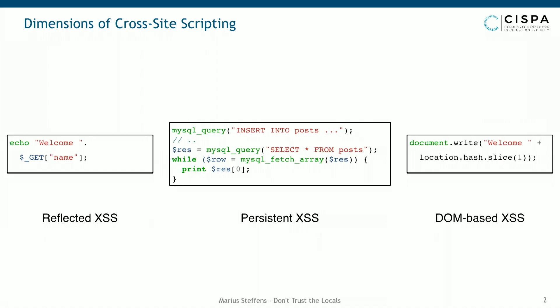When we typically talk about cross-site scripting, what you'll read in most textbooks is that we categorize cross-site scripting into three categories: reflected XSS, persistent, and DOM-based XSS. The particular threat we want to investigate lies somewhere in the intersection of persistent and DOM-based XSS.